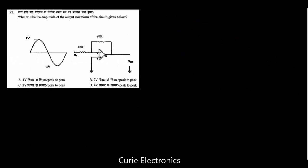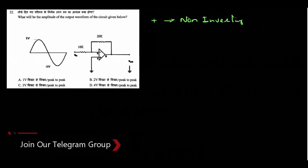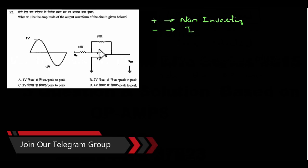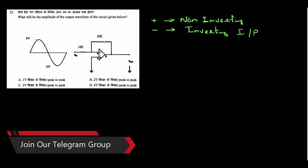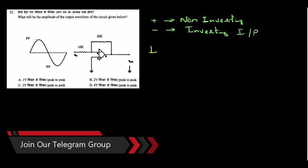What will be the amplitude of the output waveform of the given circuit? We have one op-amp circuit. The non-inverting terminal has the positive sign — that is the non-inverting input — and the negative sign terminal is the inverting input. The non-inverting input is connected to ground and the input signal is applied to the inverting terminal, so it is an inverting amplifier.